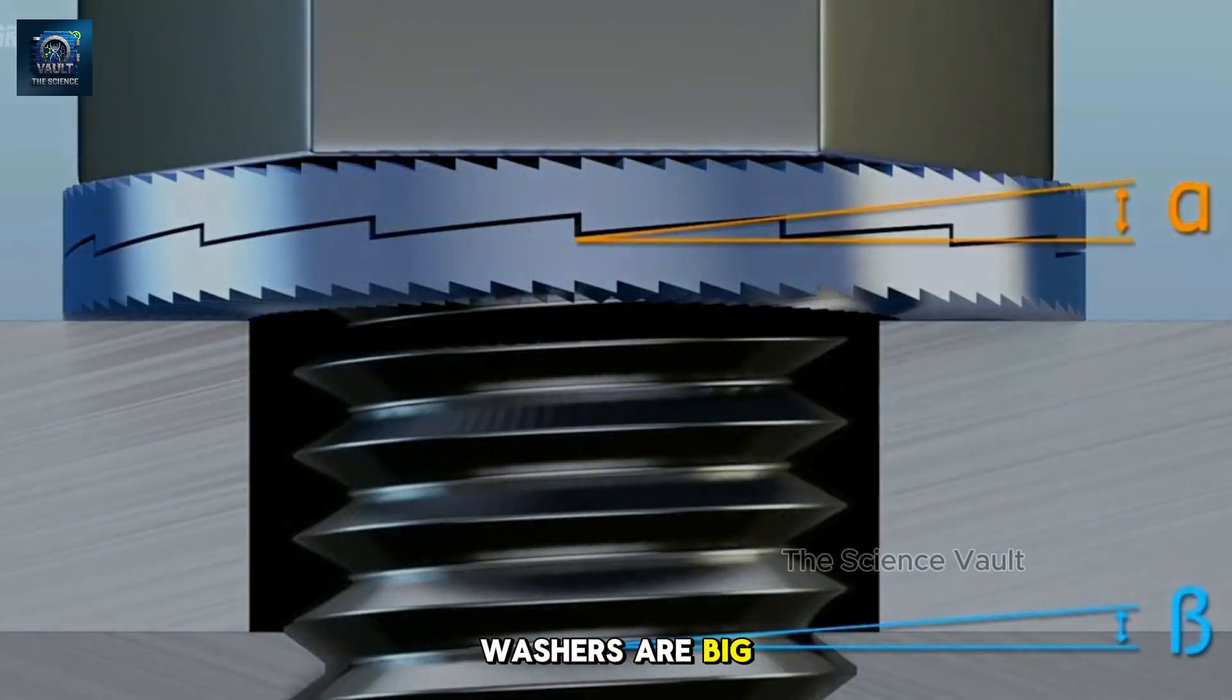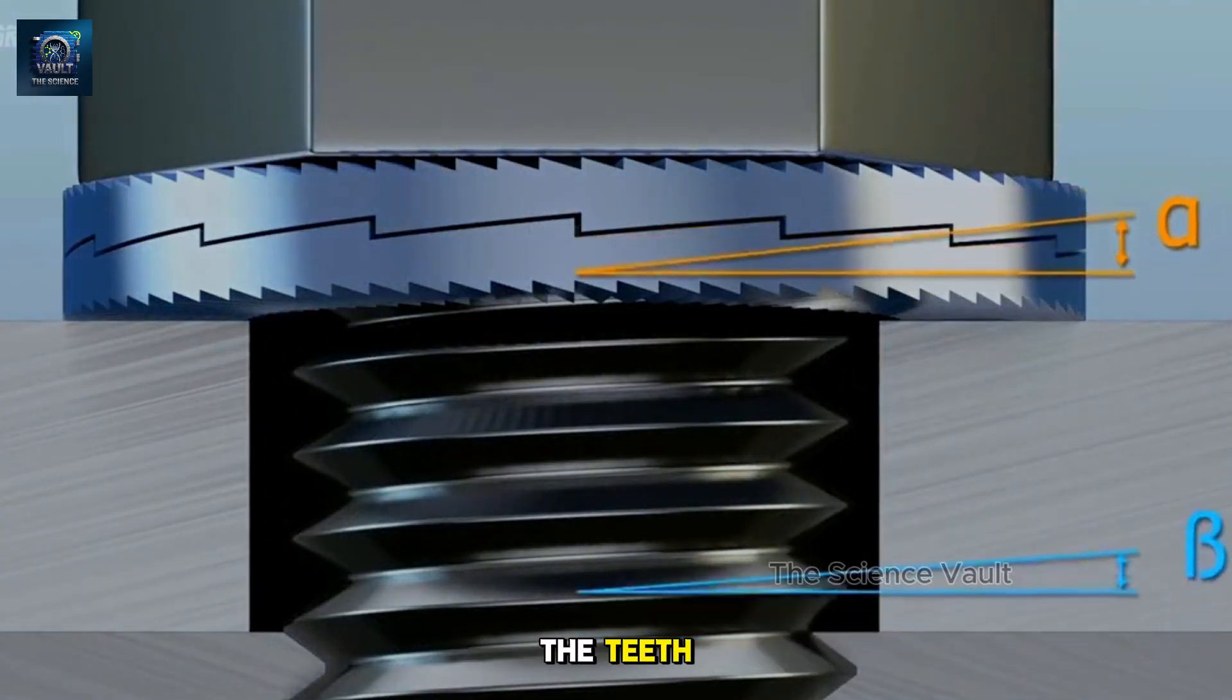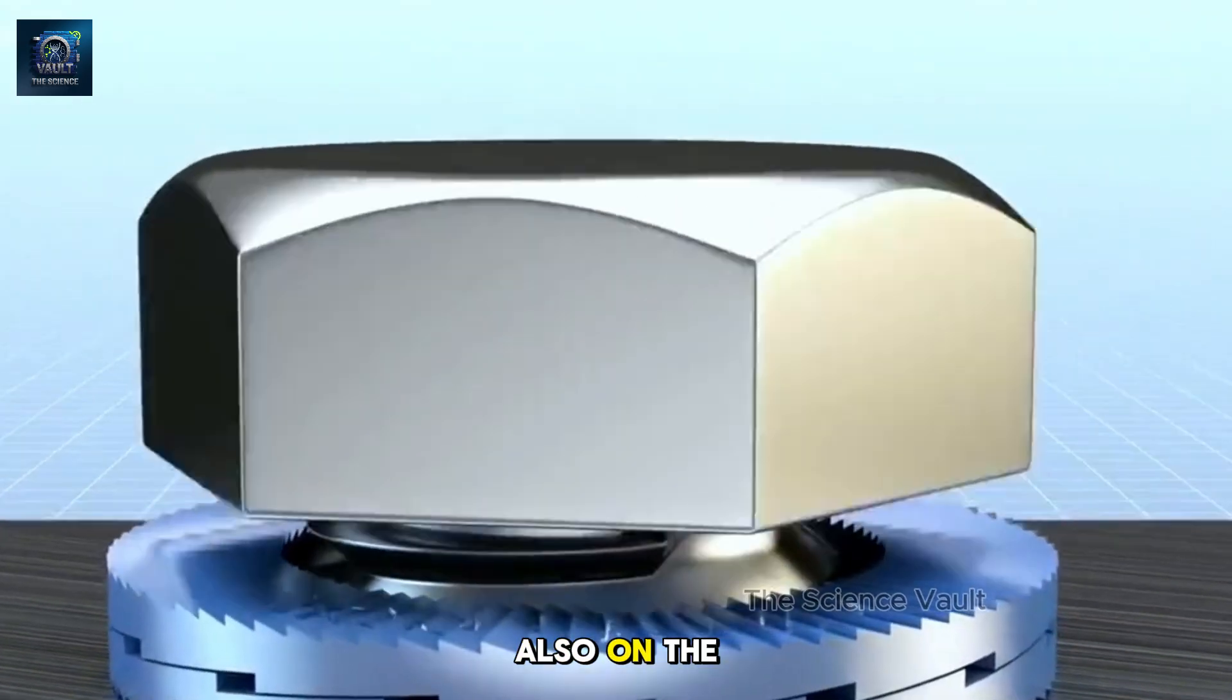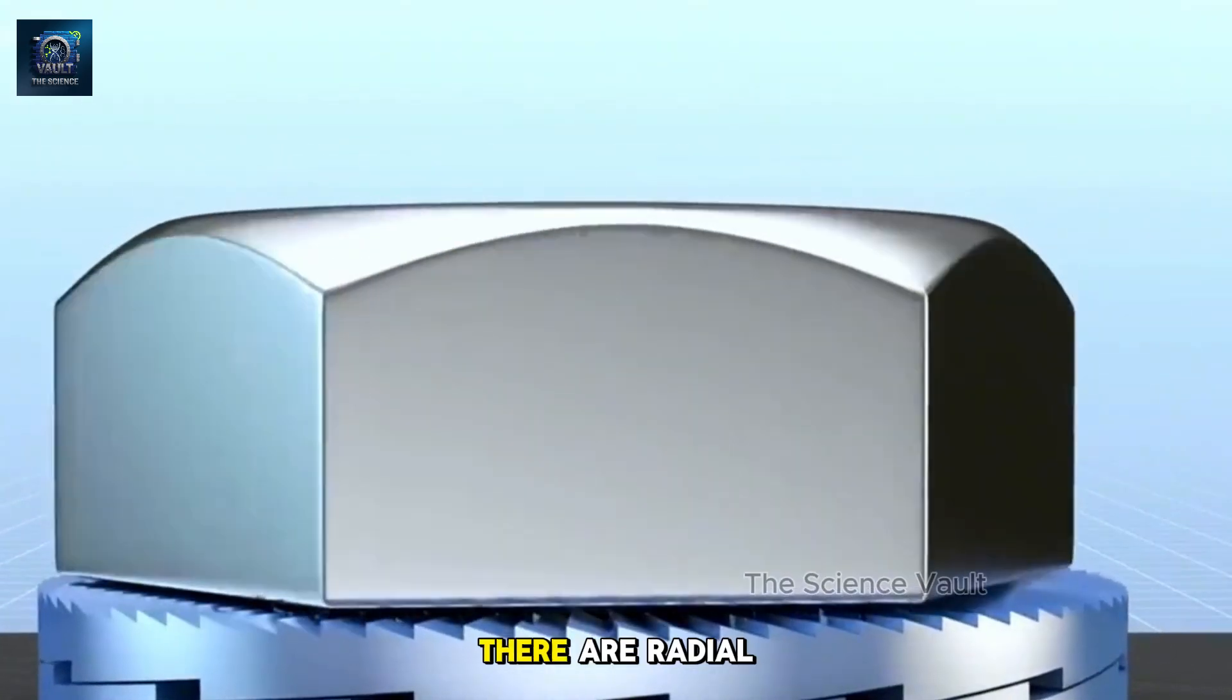Two Nord lock washers are big. The slope of the teeth is greater than the angle of the bolt thread. Also, on the other side of the washer, there are radial teeth.